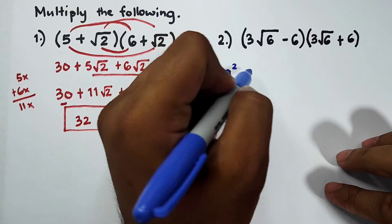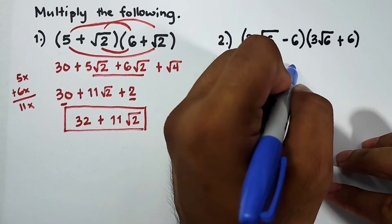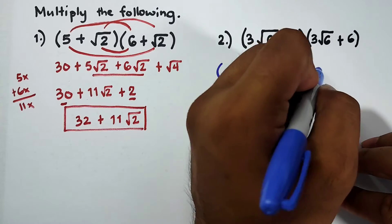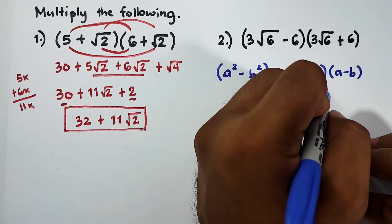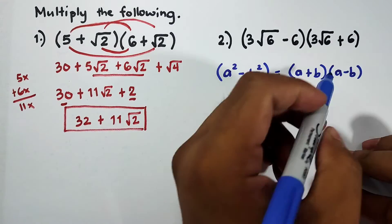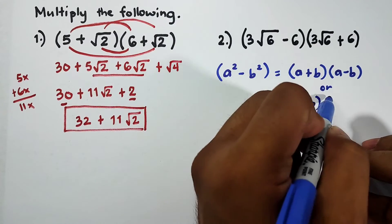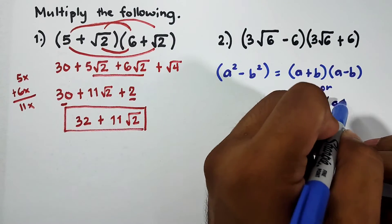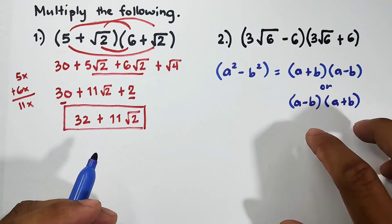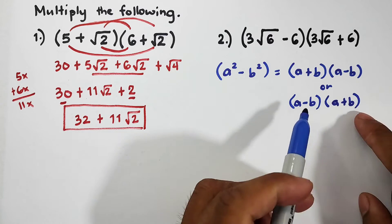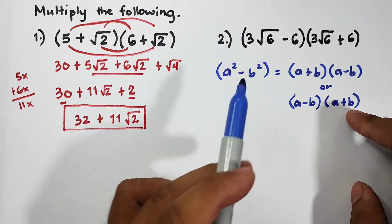If we have a² - b², we can factor this as (a + b)(a - b), or it can also be (a - b)(a + b). These are the factors, and when we multiply these two, it will give us a² - b². Although these two expressions are both binomials and we can use FOIL method, this pattern is easier and faster.